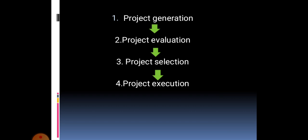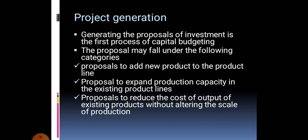In project generation, they are going to generate proposals for investment. We have different categories. One is product line — adding a product line. For example, ITC company manufactures food products, beverage products, stationery products, and cigarettes. Now it is going to add up one more variety.